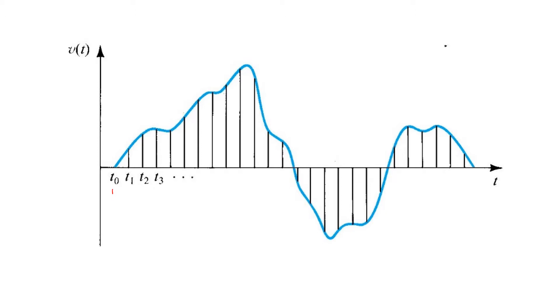That is, we represent it by considering only its values at discrete points in time, T0, T1, T2, T3, and so on in this picture.